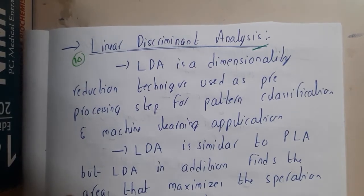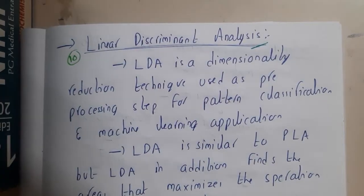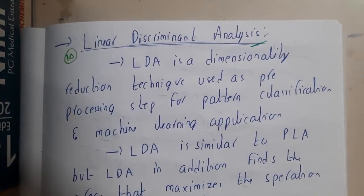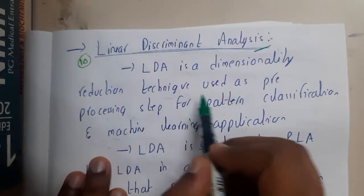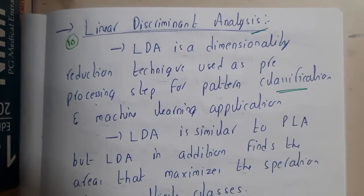Hello guys, we are back with our next lecture. In this lecture, let us go through the next method that is Linear Discriminant Analysis. This is also a dimension reduction technique. LDA is a dimension reduction technique used as a preprocessing step for pattern classification and machine learning applications.